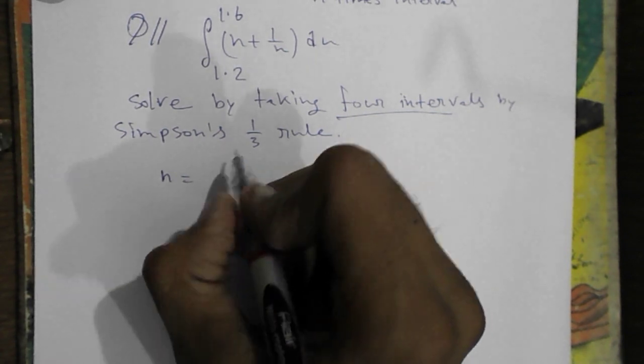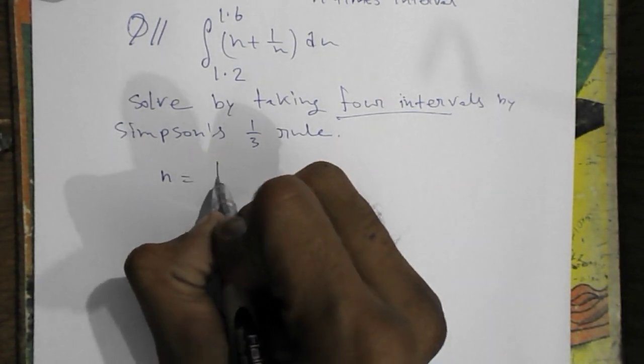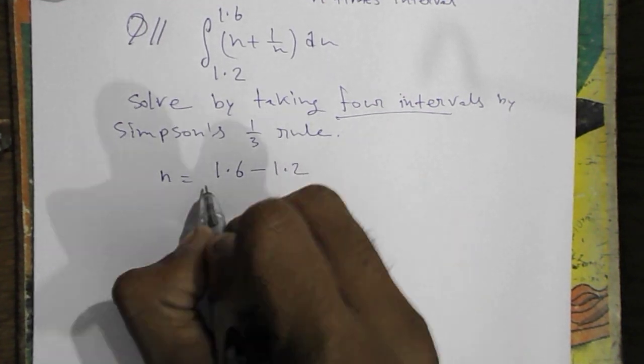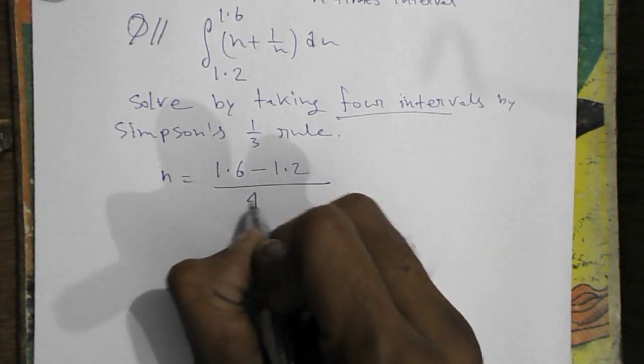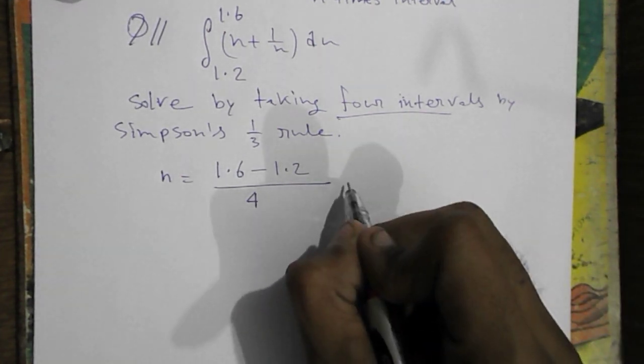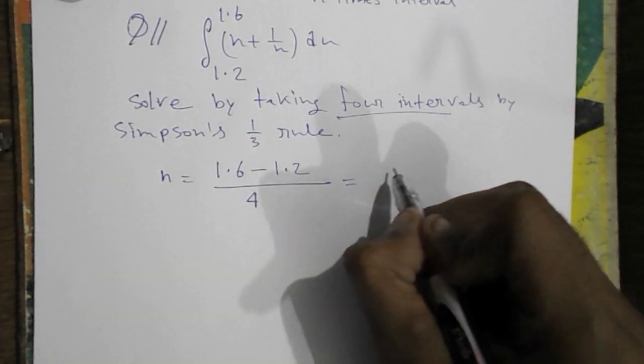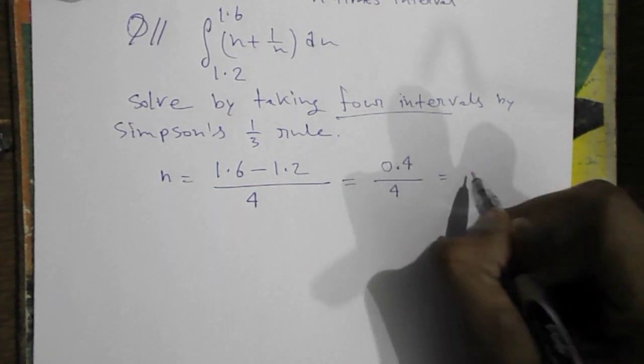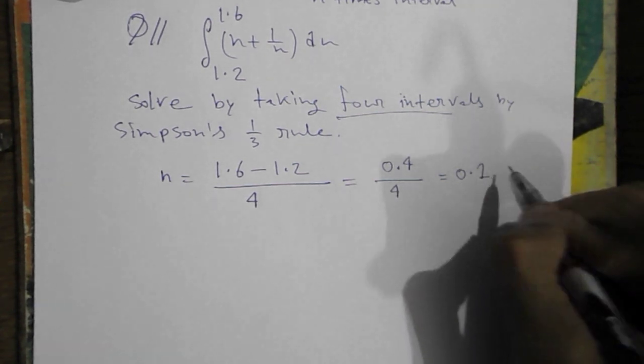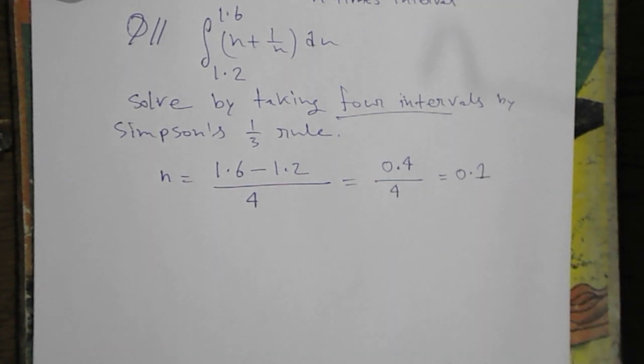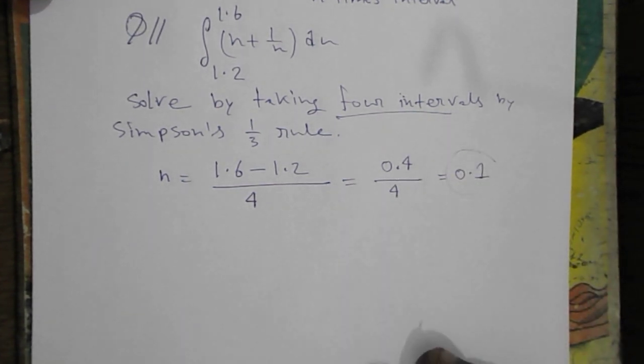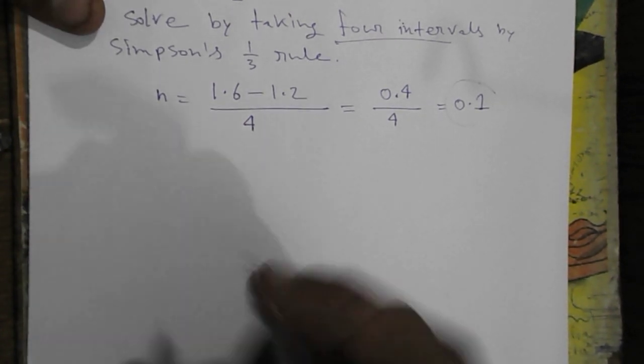Now we will subtract lower limit from upper limit. Upper limit was 1.6 minus 1.2 divided by the times of interval that is 4. Equal to that is 0.4 by 4 that means 0.1. Then now we got the h part that is 0.1.